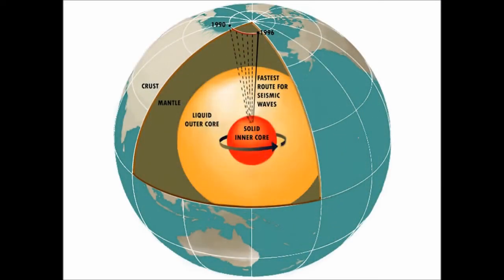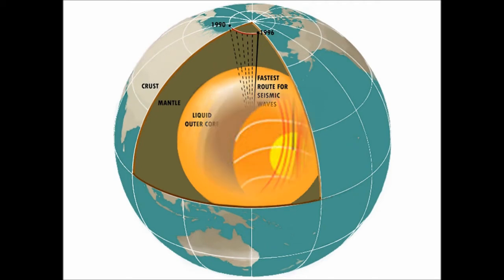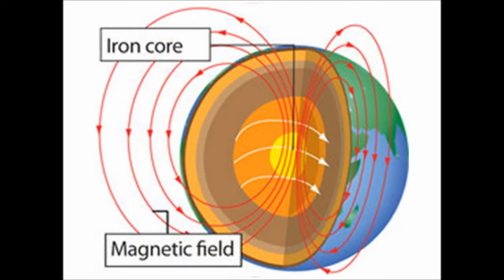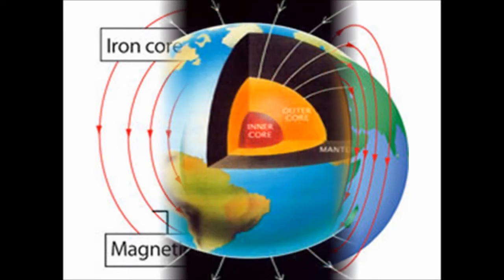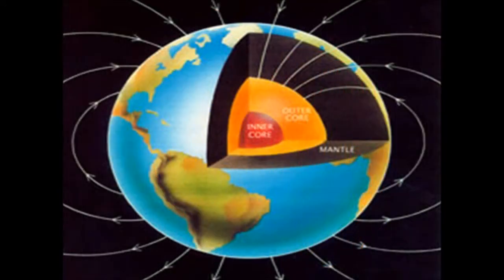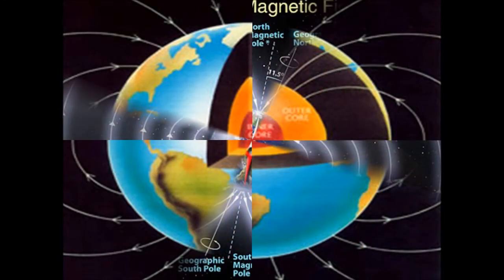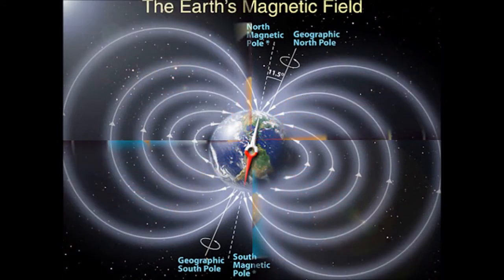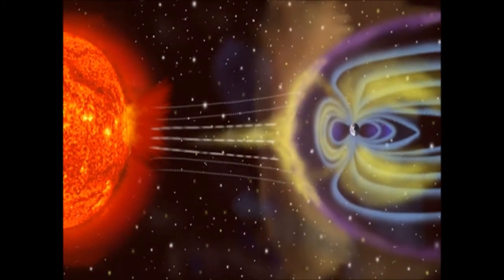Earth has a magnetic field because its solid iron core is surrounded by a fluid ocean of hot liquid metal. The flow of liquid iron in Earth's core creates electric currents, which in turn create the magnetic field. The Earth's magnetic field is extremely important for protecting the planet from so-called solar wind.